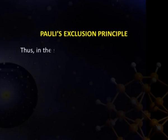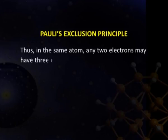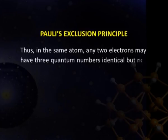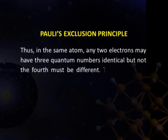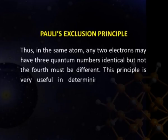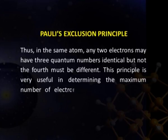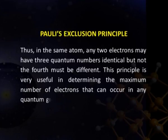Thus, in the same atom, any two electrons may have three quantum numbers identical, but the fourth must be different. This principle is very useful in determining the maximum number of electrons that can occur in any quantum group or energy level.